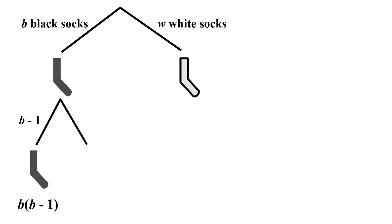On the second draw, we could have also drawn a white sock. There would have been W white socks remaining in the drawer, and if we multiply B times W, we get the number of ways that we could pick a black sock on the first draw and a white sock on the second draw.